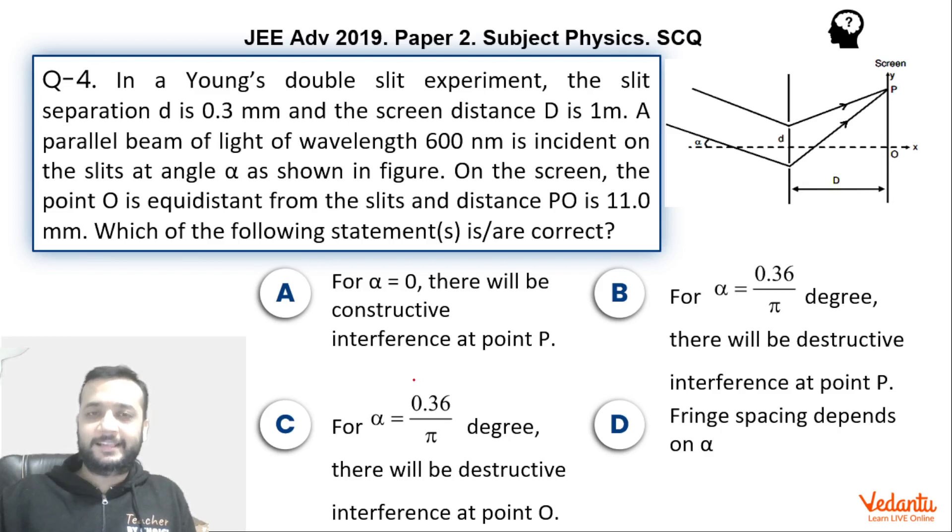So let's understand that it's not more than one correct, it's one or more than one correct. So of course you can always have one option correct in one or more than one correct. So if you are confident enough, just do it and move on to the next question.